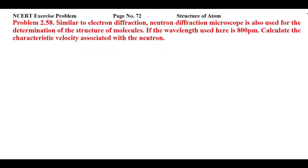This is NCERT exercise problem 2.58 from page 72 of Structure of Atom. Similar to electron diffraction, a neutron diffraction microscope is also used for the determination of the structure of molecules. If the wavelength used is 800 picometers, we have to calculate the characteristic velocity associated with the neutron.